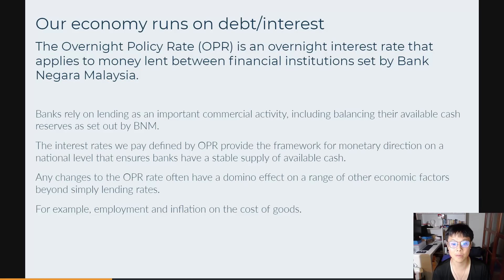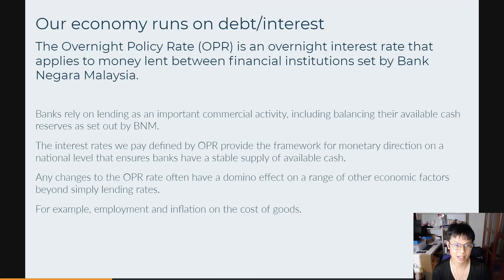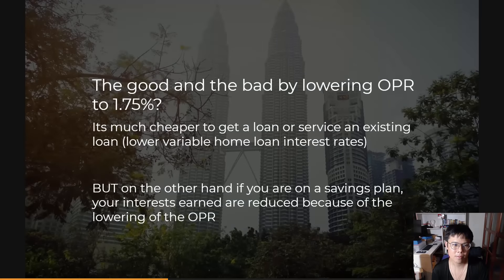Any changes to the OPR rate often have a domino effect on a range of other economic factors beyond simply lending rates — for example, employment and inflation on the cost of goods. This happened because of the COVID-19 pandemic, and I want to show you the change over time. But first, let's get to the good and the bad.